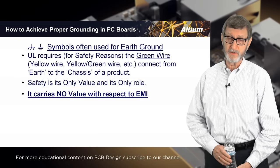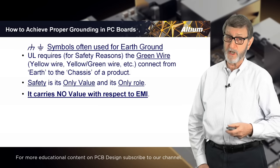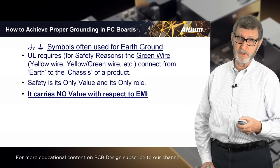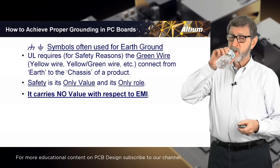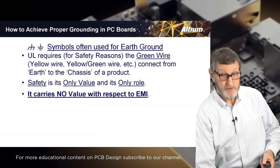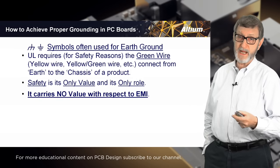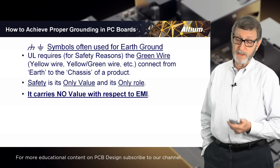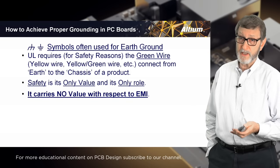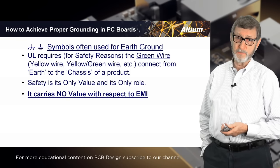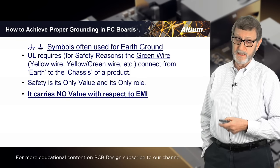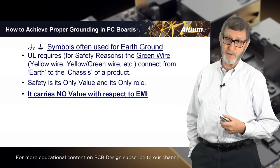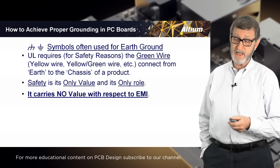The reason we attach things to earth today is safety — safety is its only value and its only role. It has nothing whatsoever to do with passing EMI testing; that third wire carries no value with respect to EMI. In fact, if we don't attach the third wire correctly, it will become the EMI problem. You generally have to put some inductance in the wire so it won't transmit high frequency energy back down toward earth, otherwise it behaves as an antenna. Your cell phone isn't attached to the earth, and aircraft avionics pass EMI testing without any connection to earth.